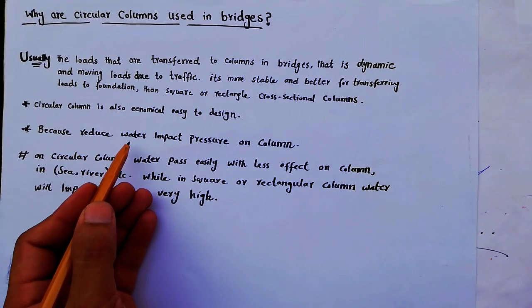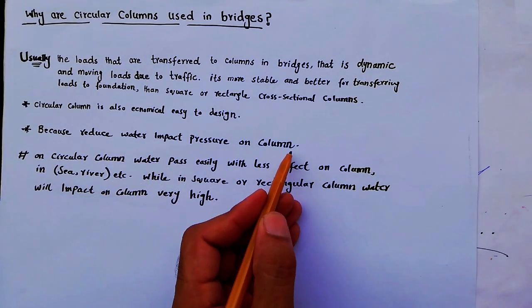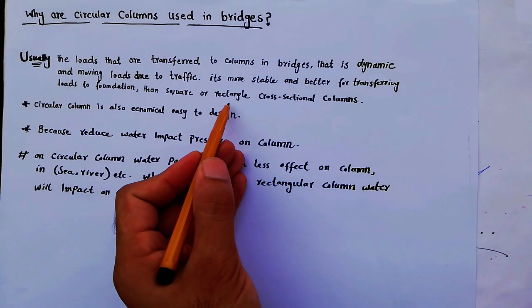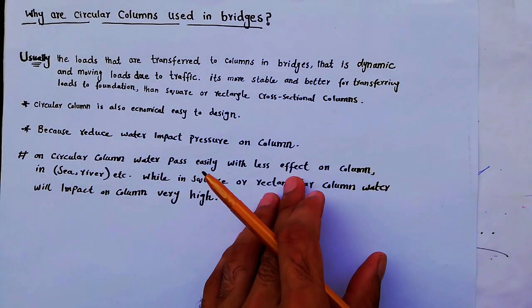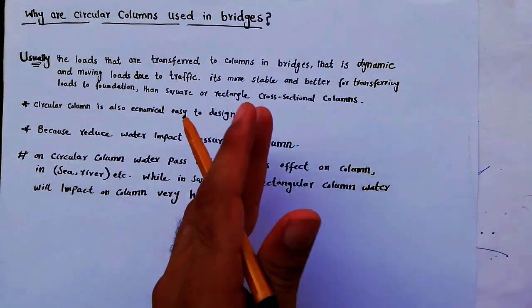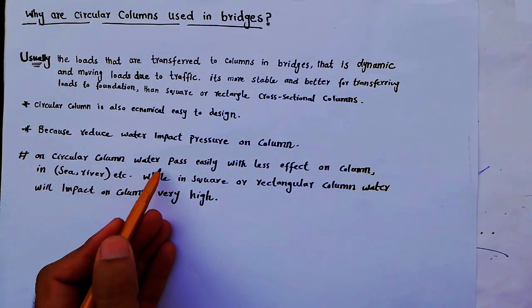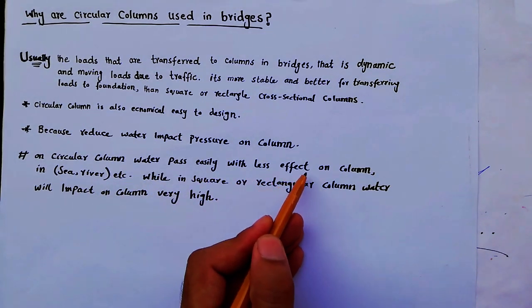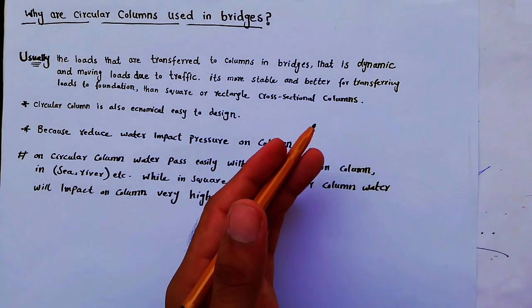Another reason we design circular columns is that they reduce water impact pressure on the column, compared to square or rectangular columns. Water passes easily around a circular column with less effect.